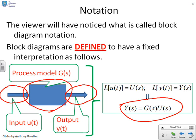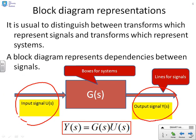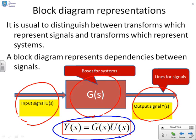To summarise block diagram interpretation: the line coming in represents the input signal U(s), the line going out represents the output signal Y(s), and the box in the middle represents the system dynamics G(s). The interpretation is that Y(s) = G(s) × U(s). The arrow coming in is a Laplace transform of a signal; you multiply that by the transfer function in the box to get the Laplace transform of whatever comes out.